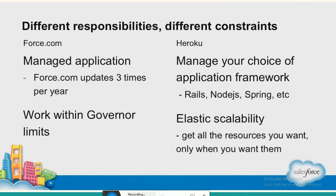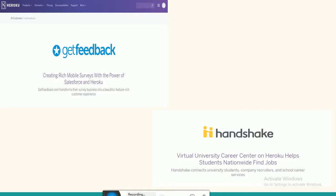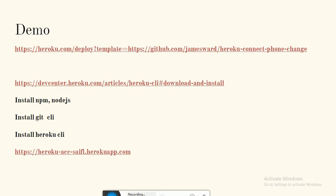Now what is the difference between force.com and Heroku? Force.com is a managed application with three updates per year — winter, summer, and one more — and has certain limitations called governor limits: for example, a maximum of 200 queries in a for loop, 25,000 SOQL records allowed, and a 10-millisecond timeout. In Heroku, you choose your own language, there are no governor limits at all, and it is elastic.